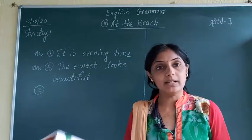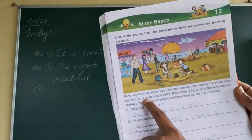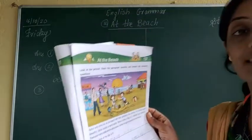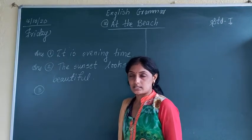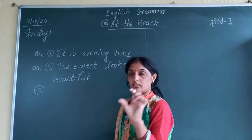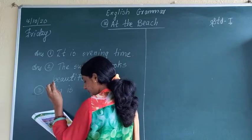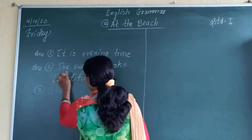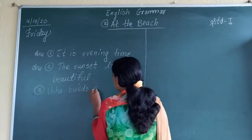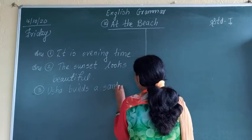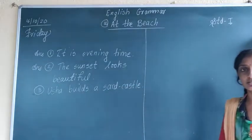Third question: what does Usha build? What is Usha building? Here it is told — Rahul hoists a flag on it, and Usha builds a sand castle. Spell it: C-A-S-T-L-E, castle. Usha builds a sand castle. That is our third answer.